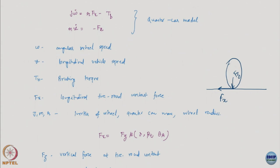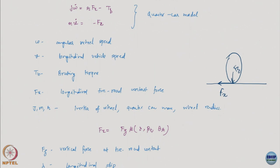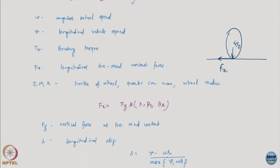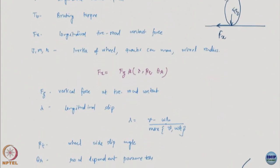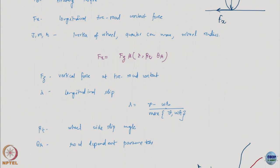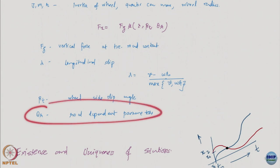Then you have j, m, and r, which are basically your inertia of the wheel, m is the mass, and r is basically the wheel radius. This fx itself — as you know — the lateral force always depends on the normal force, so it is basically the normal force multiplied by some coefficient. You can see that there is actually no non-linearity here. Non-linearity actually enters here: this depends on fz and then mu, which depends on lambda, beta, tau, and theta_r, where lambda is a longitudinal slip. So you start seeing some non-linearity here, and then you have the wheel side-slip angle and some road-dependent parameters.